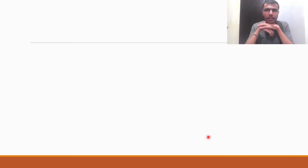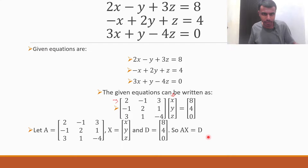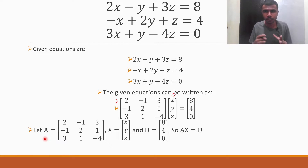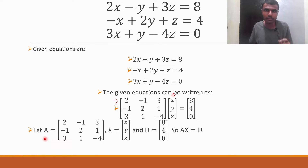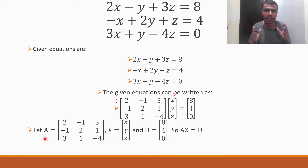Before we apply the matrix inversion method, we have to first find out whether the determinant of matrix A is equal to 0 or not. If the determinant of A is equal to 0, then we cannot solve the given system of equations by matrix inversion method.